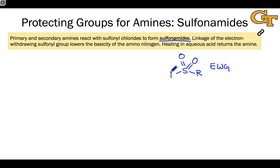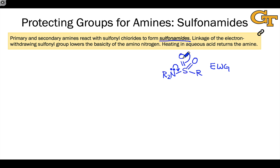When we connect the sulfonyl group to an amino nitrogen, we end up with what's called a sulfonamide — it looks like an amide with sulfur at the center, or S=O instead of the carbonyl carbon. We can notice the resonance delocalization of the amino lone pair onto the sulfonyl group oxygen, and that's really the key to protection of the amino nitrogen under acidic conditions. This nitrogen is no longer basic at all.